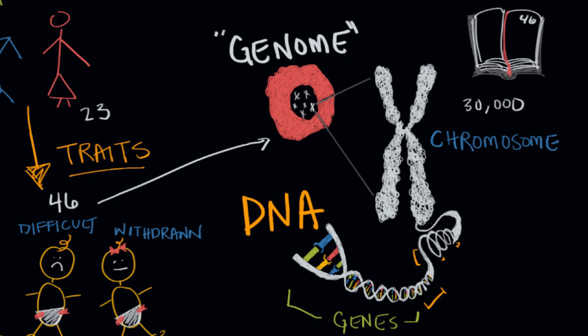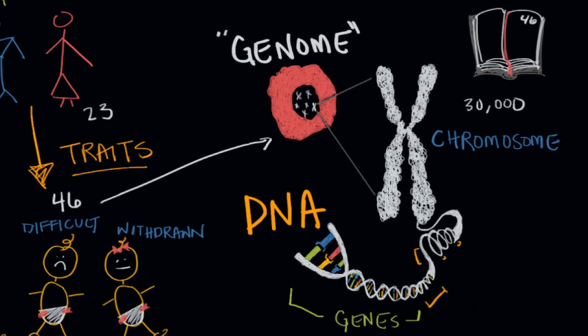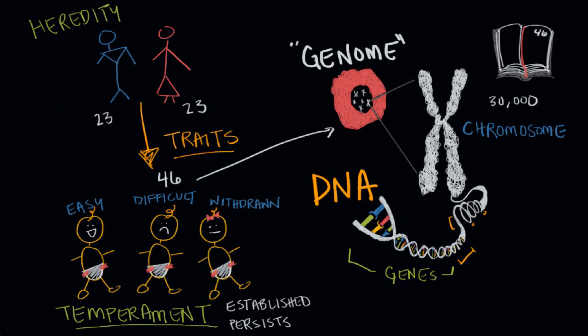But most of our traits, especially the complicated ones like intelligence or happiness or aggressiveness or all of those characteristics that play into our temperament—the ones that are heavy hitters in our behavior—are traced back to groups of genes. And those groups of genes are actually interacting with each other and with our environment.